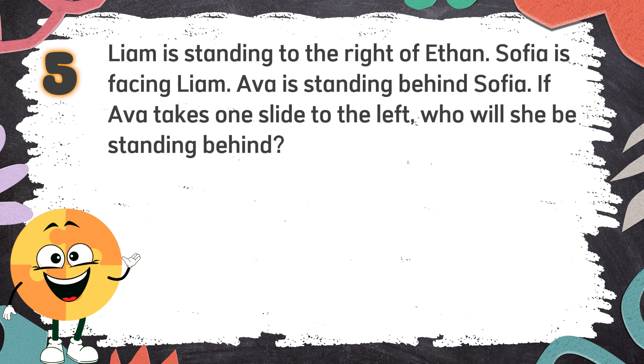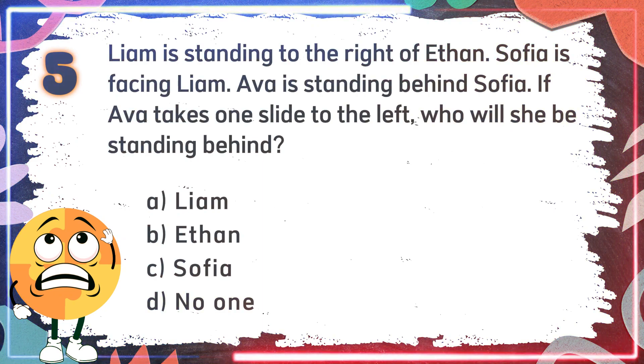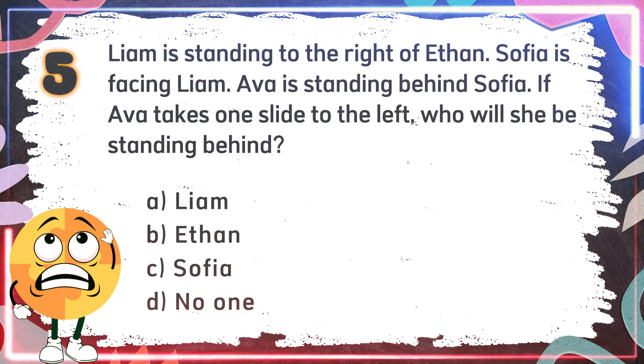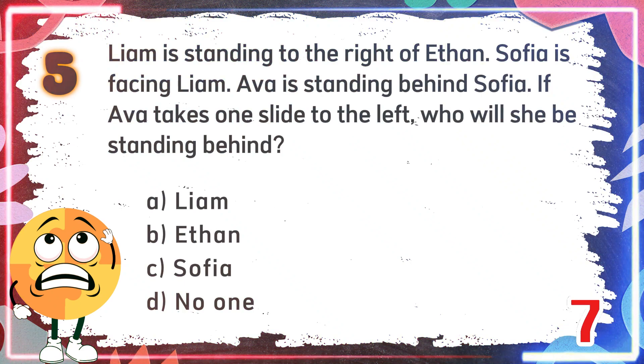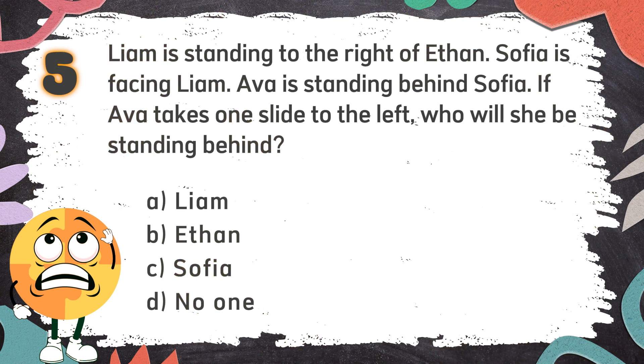Number 5: Liam is standing to the right of Ethan. Sophia is facing Liam. Ava is standing behind Sophia. If Ava takes one slide to the left, who will she be standing behind? The choices are A. Liam, B. Ethan, C. Sophia, D. no one. The correct answer is B. Ethan.